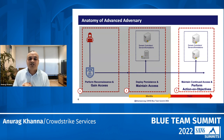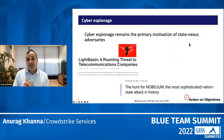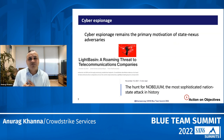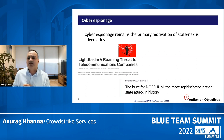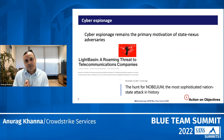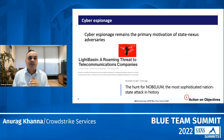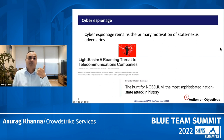Let's talk about what action on objectives looks like for these kinds of adversaries. There are three buckets. The first, primarily the primary aim of a lot of these threat actors, is cyber espionage. Working on threat actors like LightBasin targeting telecom companies, Nobelium, also known as APT29, Cozy Bear — they're primarily focused on meeting the intel requirements of their handlers and providing the data they are being requested for. They are there to exfiltrate data, look for data, and exfiltrate it as and when it gets available. They're not here for one-time data exfiltration; they're going to stay there and keep taking data out wherever there is a requirement.